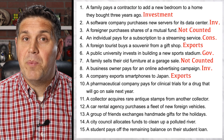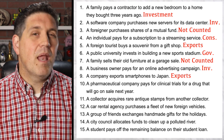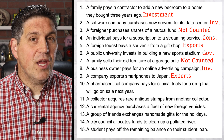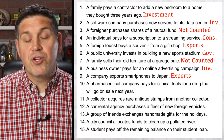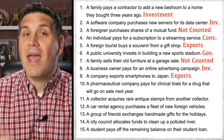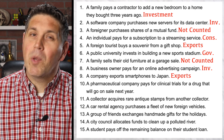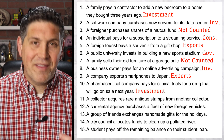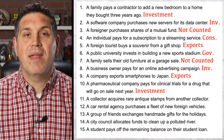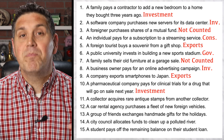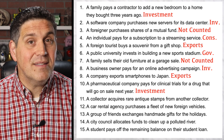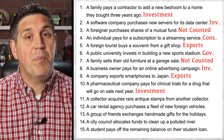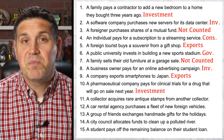Number eight counts in GDP as investment spending, and number nine counts in GDP as exports. Number ten is a little trickier — it's a pharmaceutical company paying for drug trials for a product coming out next year. That's investment spending, a business spending money on a product, so number ten does count in this year's GDP as investment spending.